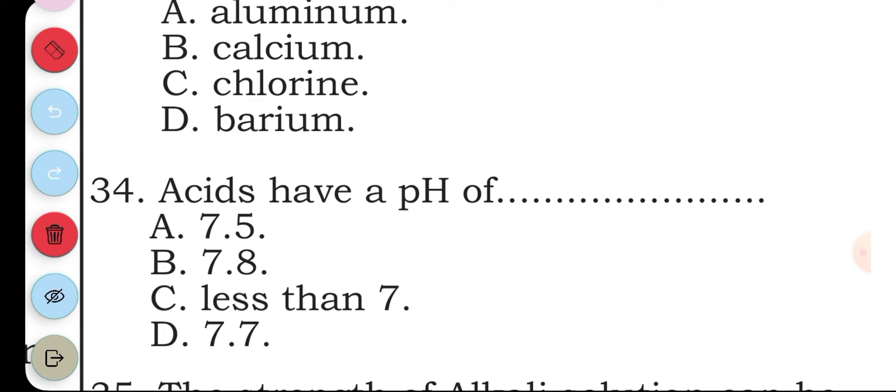Question thirty-four: acids have a pH of: A 7.5, B 7.8, C less than 7, D 7.7. The answer to question thirty-four is C, less than 7.